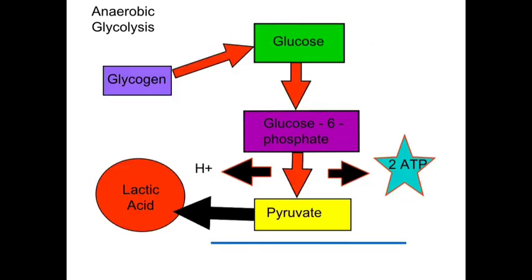The lactate anaerobic energy system involves the partial breakdown of glucose. A full breakdown of glucose can only occur in the presence of oxygen, so this is an anaerobic process. Glucose is stored around the body as glycogen. When it is required, it is converted back to glucose and through a process known as glycolysis, it is converted into pyruvate.